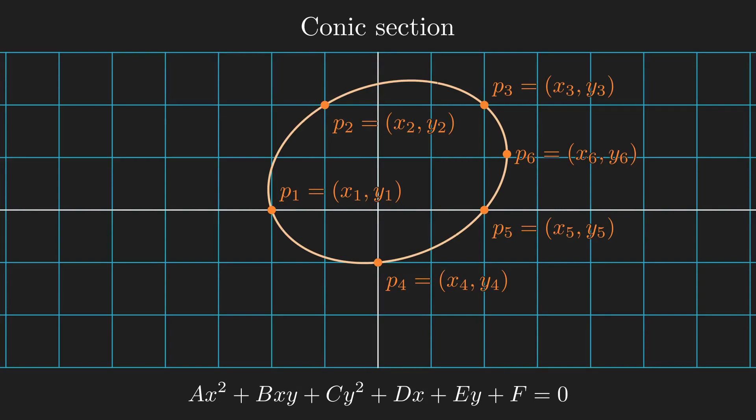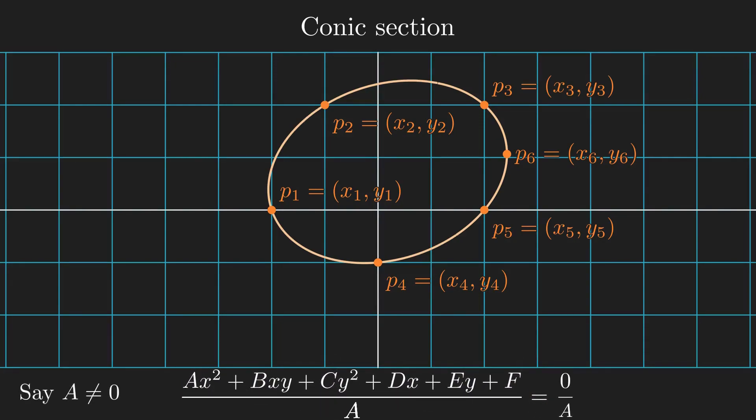The number of required points is the same as the number of free parameters of the equation. The equation seems to have six free parameters, but I can always divide out a nonzero coefficient, let's say the coefficient a, and treat each new coefficient as a free parameter. So there are actually five free parameters.